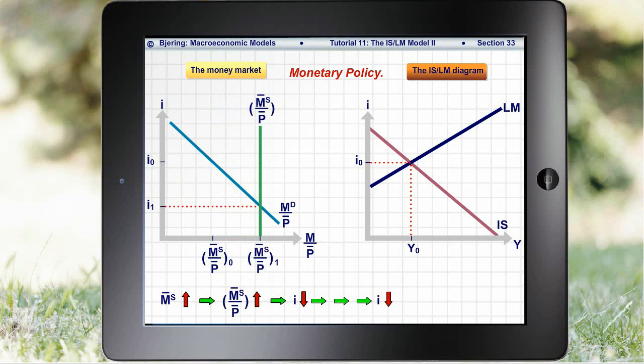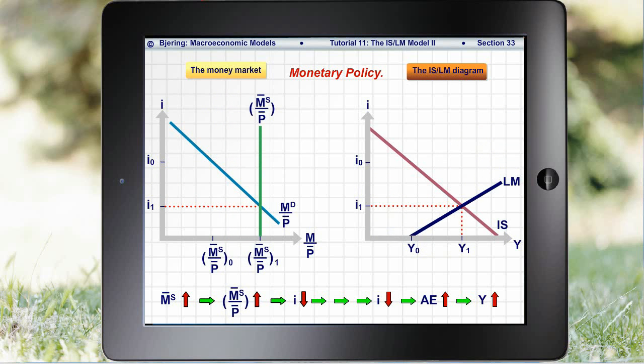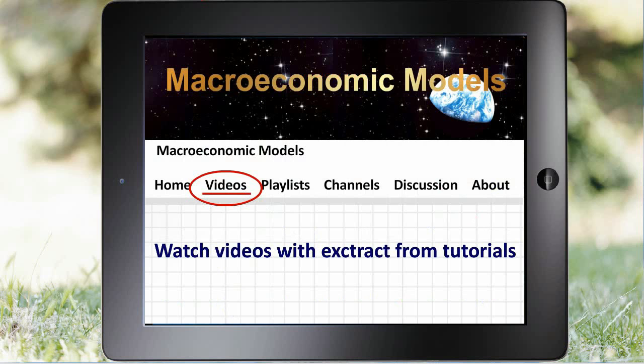The decrease in the nominal interest rate increases aggregate expenditure and equilibrium income, as it appears from the ISLM diagram, where the increased supply of money shifts the LM curve down.